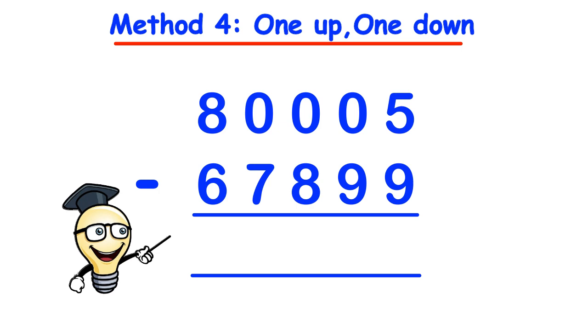So looking at this example 800005 take away 67899, what we do here is we start on the right hand side again. Now since 5 is less than 9 and since 5 cannot subtract 9 unless we go into negative numbers, what we do is we put a 1 in front of the 5 to make 15.